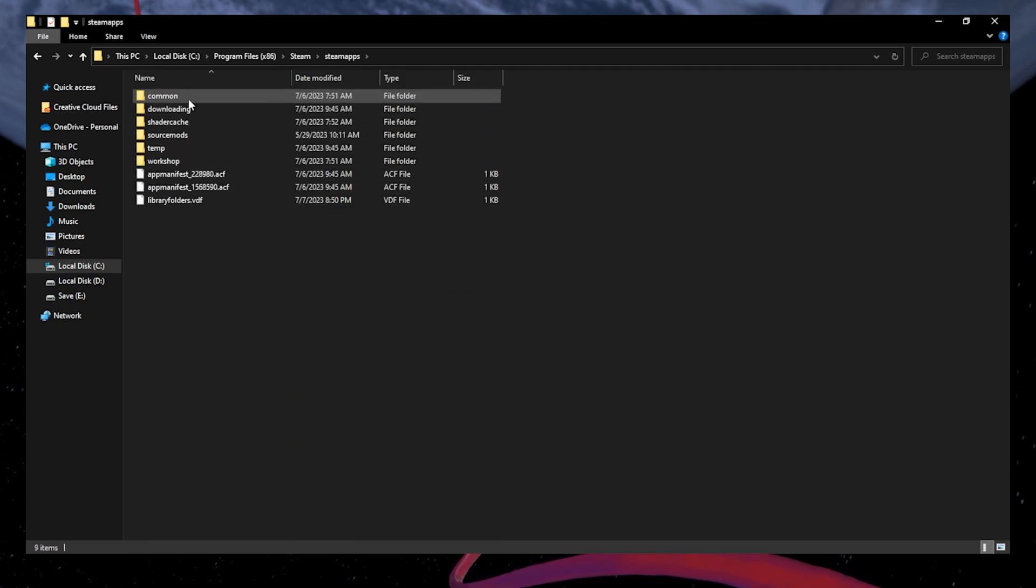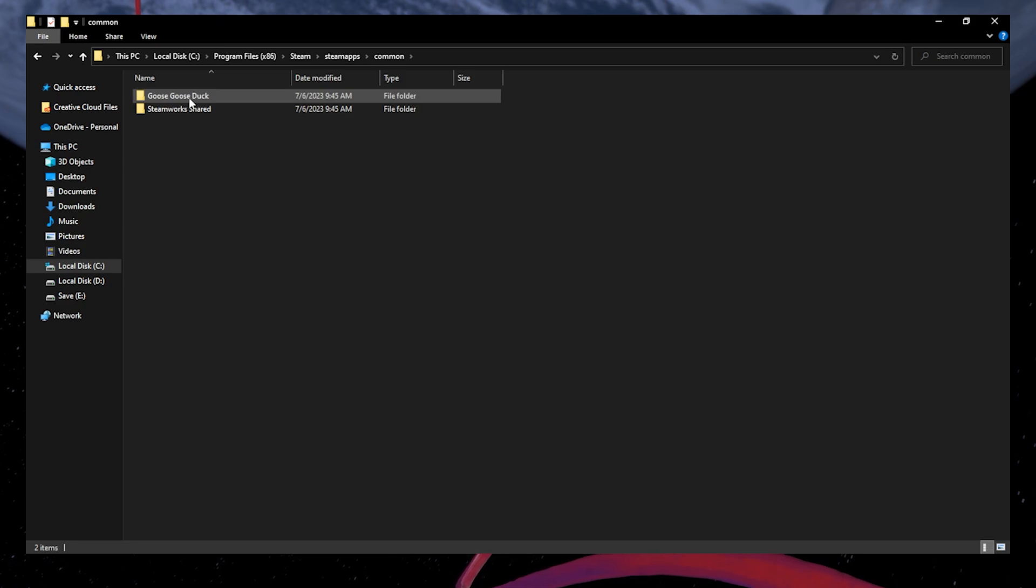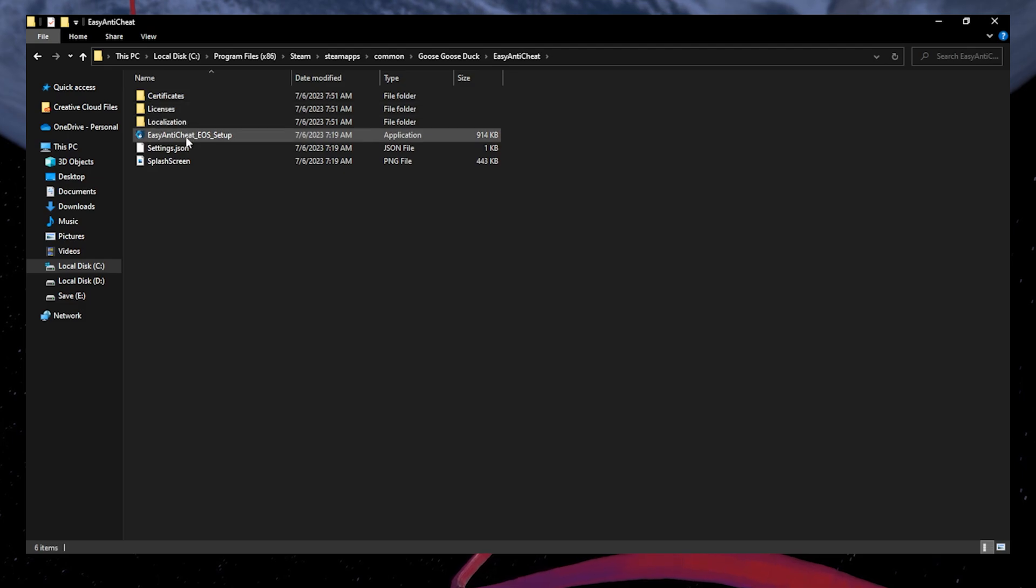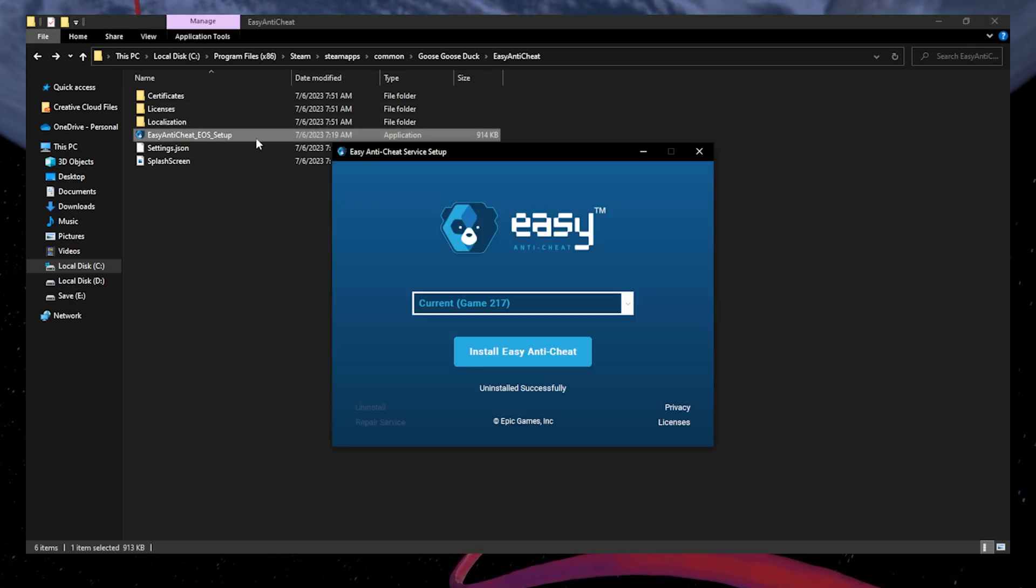From here, navigate to the game folder in which you are getting the easy anti-cheat error. Follow the same steps if you're getting the error with Epic Games. In my case, it's Goose Goose Duck. Once you open it, find the Easy Anti-Cheat folder and open it. Double-click the Easy Anti-Cheat Setup process and make sure to install or reinstall the anti-cheat.